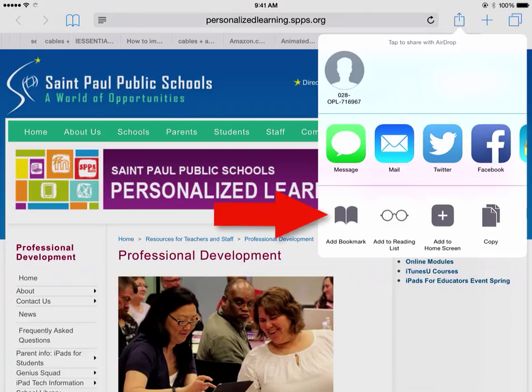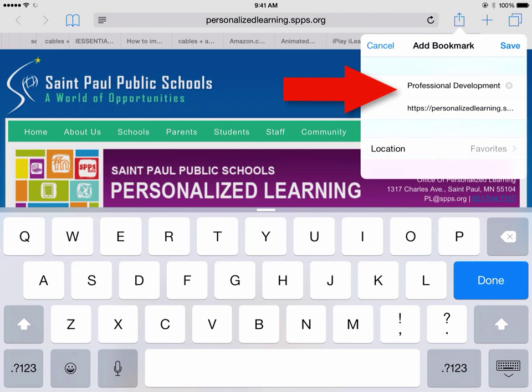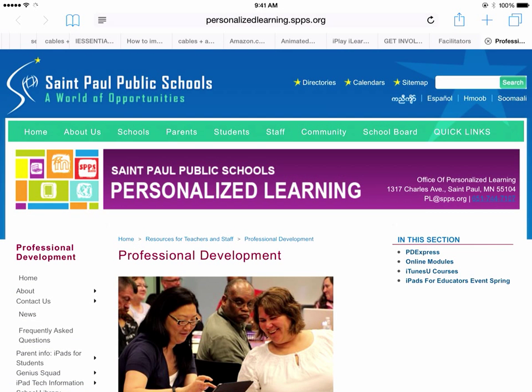For right now, I'm going to tap on the add a bookmark icon and it's going to save it to my bookmarks. I'm going to leave it with the same title professional development there. Then I'll tap on the word save in the top right corner of that little pop-up, and it's gone to my bookmarks.